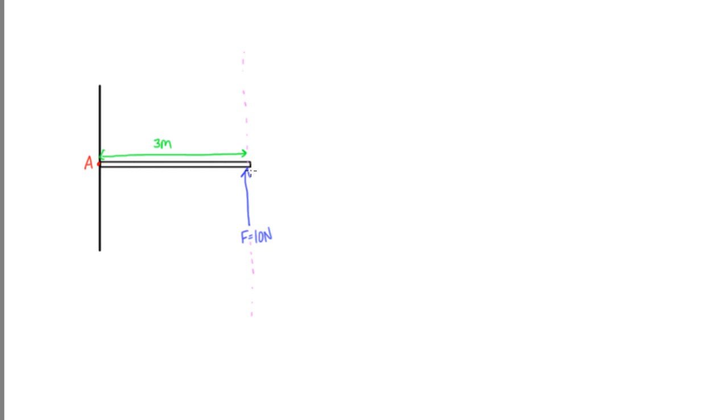We already know how to calculate the moment that this is going to cause about point A. The moment about A with counterclockwise being the positive direction is equal to the distance that's perpendicular to the line of action of the force times the magnitude of the force. So we have 3 meters times 10 newtons, which gives us 30 newton meters in the counterclockwise or positive direction.